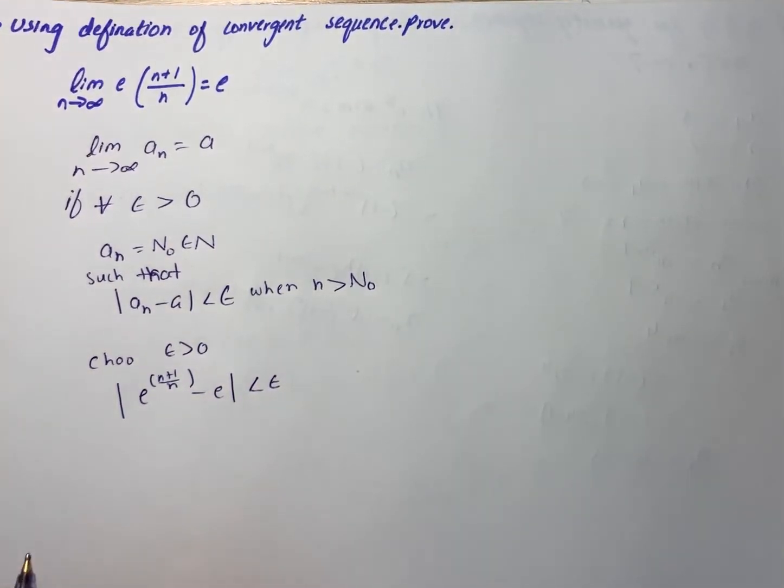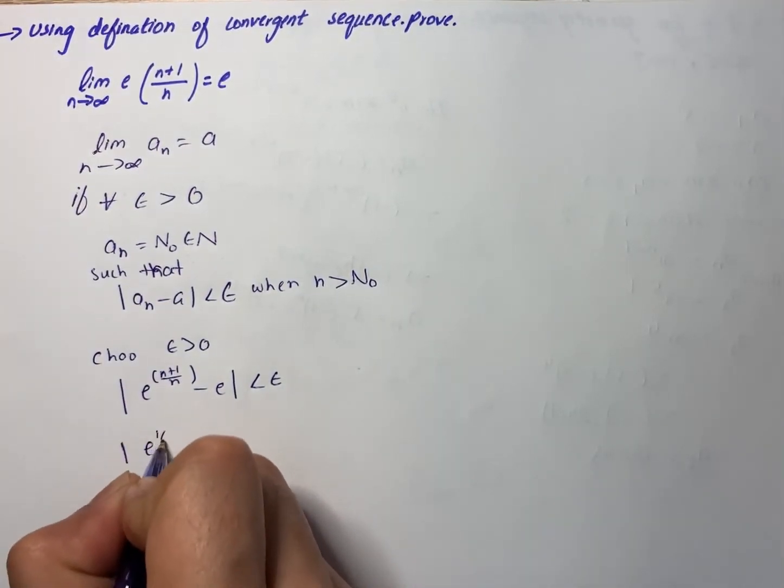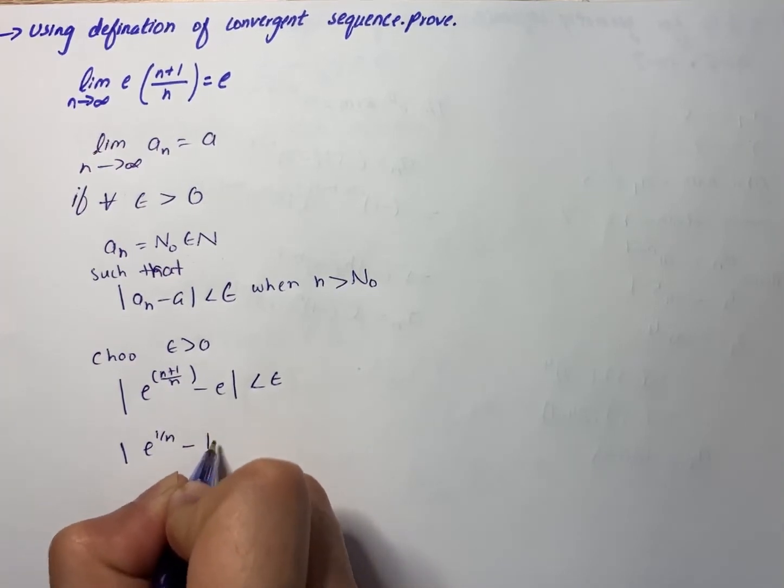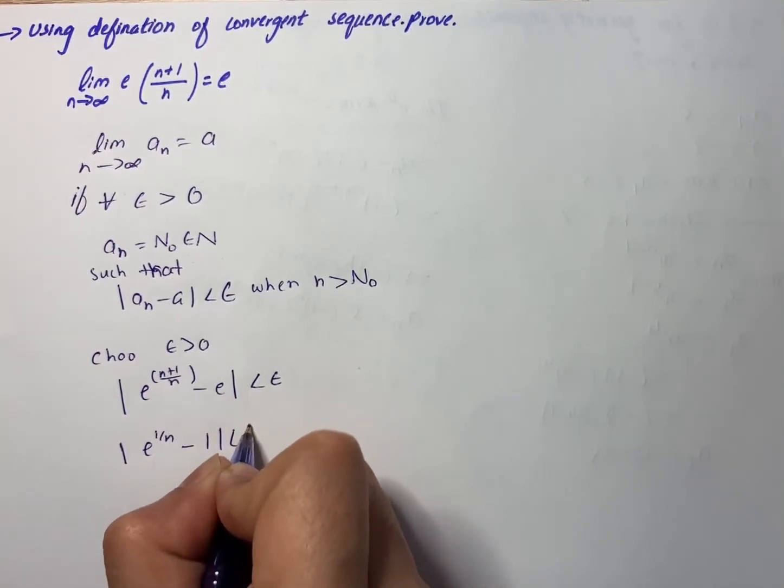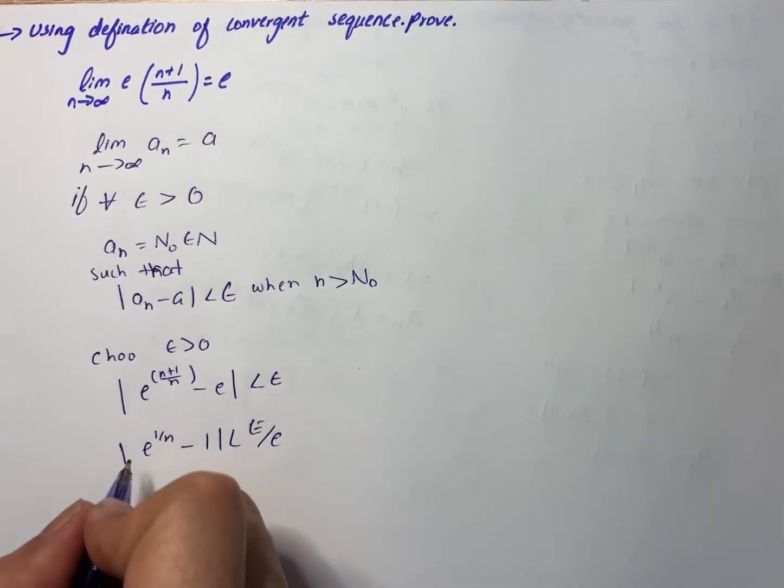We will start simplifying it. So we have |e^(1/n) - 1| is less than epsilon/e.